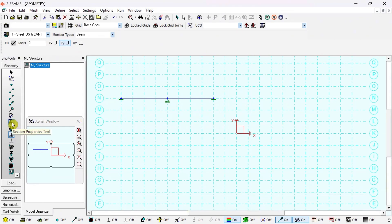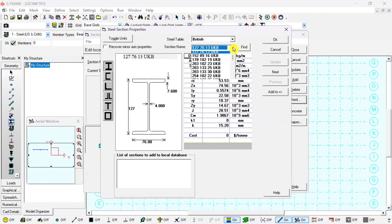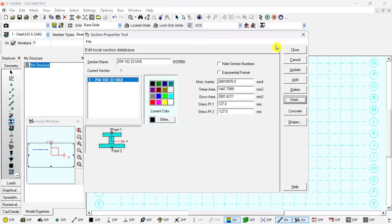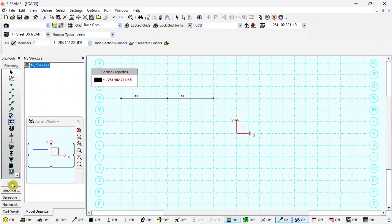Then I will define the section properties. Click on Section Properties and define a new section. I will go to Steel and I will choose any UKB—that is a beam section. Click OK and click Update and Close. This section now has been assigned to the members.